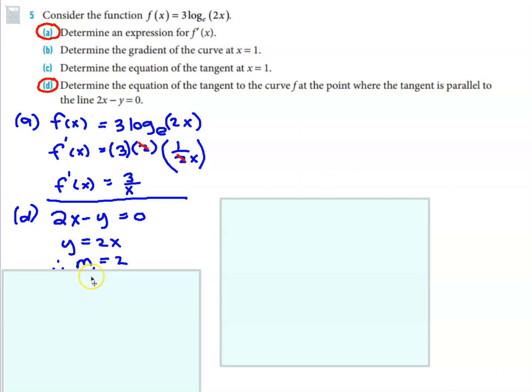And that means the gradient of the other function, sorry, the tangent line, is 2, and that also means the gradient of the function is 2. This is the gradient of the function, and the gradient of the tangent line are equal. So, now we know what the derivative of the function is.